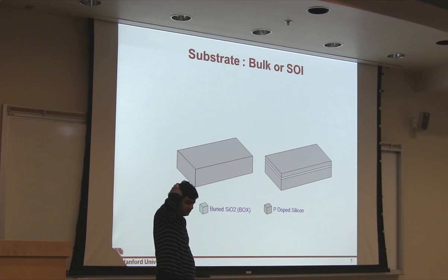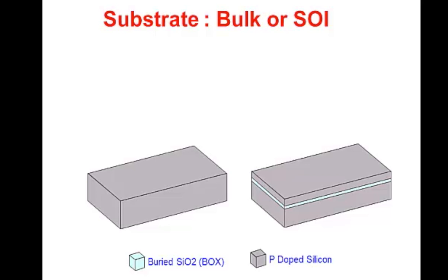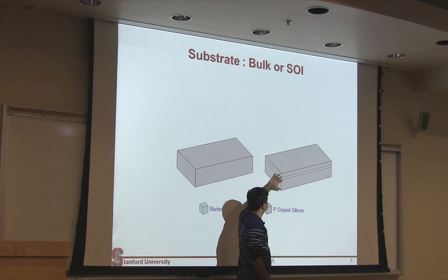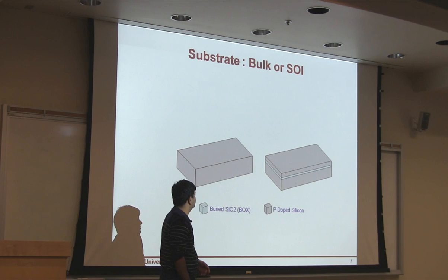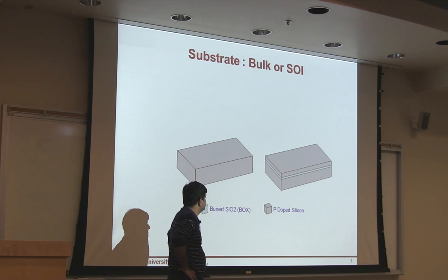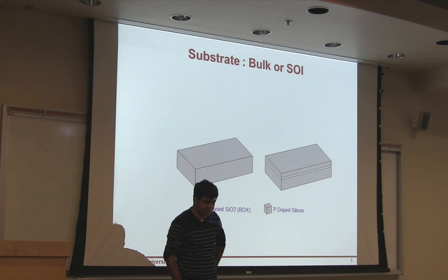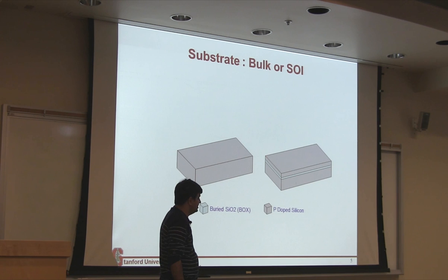So the first thing we need to start a process is we need some wafers, right? So the most common wafers which are used are P-type wafers. And they could either be bulk or you get these things which are called SOI wafers, where you have a thin layer of silicon. It is separated from this handle wafer by this oxide layer. It's also called, if this thin layer of silicon is less than 10 nanometers, so it's also called ETSOI or extremely thin SOI. The company which makes a lot of this SOI wafers is a company called SOITec. They have a special process to make these wafers.